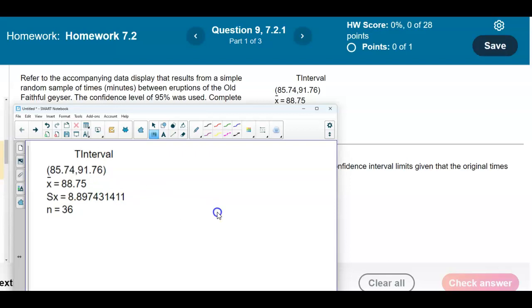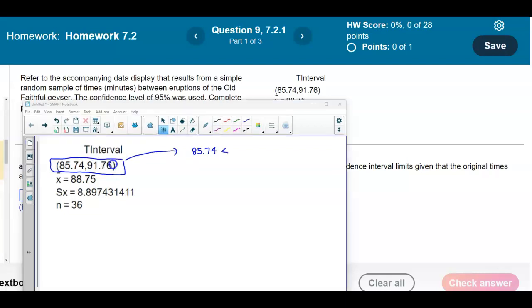So we have our T interval and this is the confidence interval. We have 85.74 as the lower limit, and then the upper limit is 91.76.